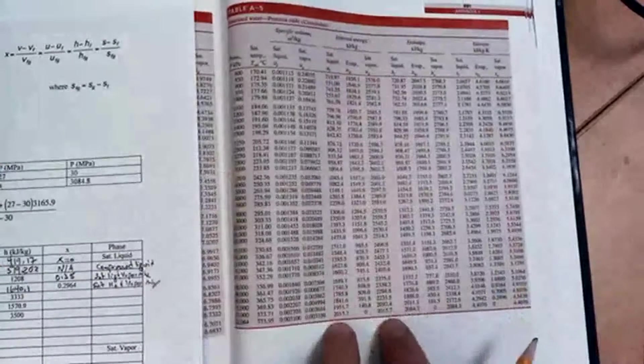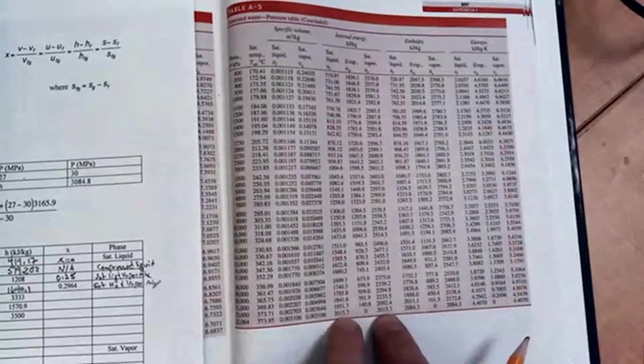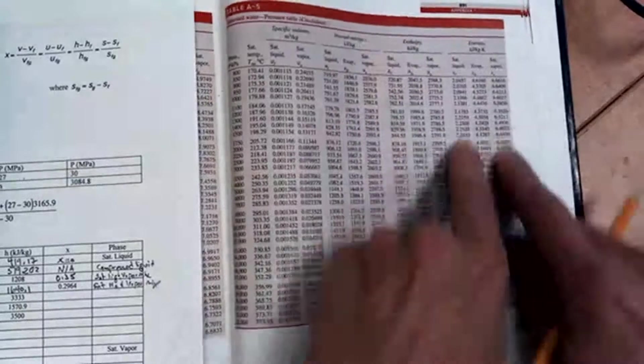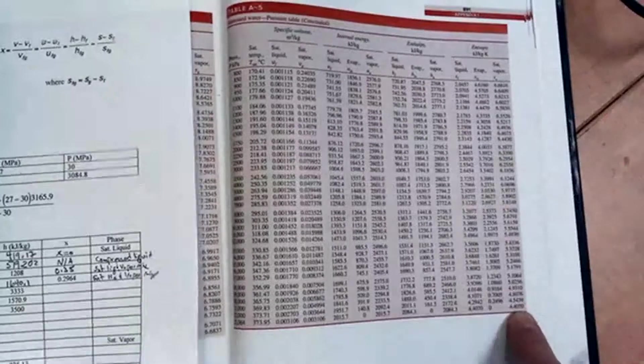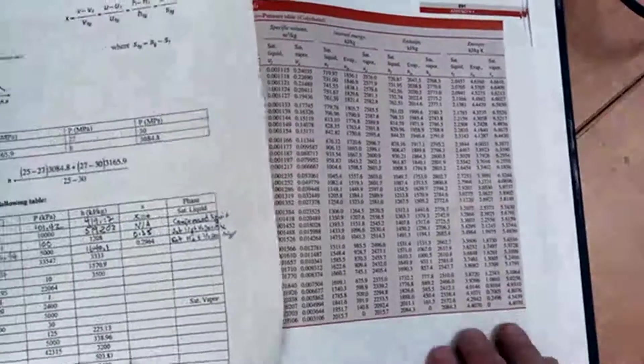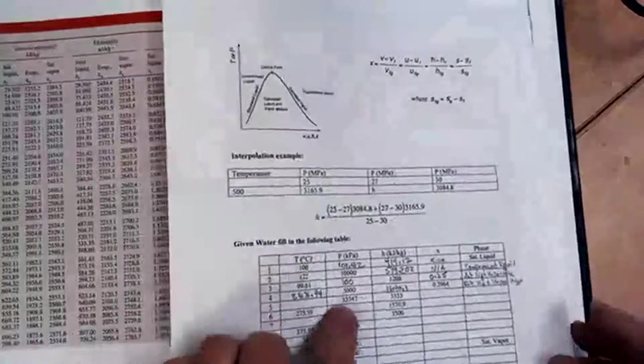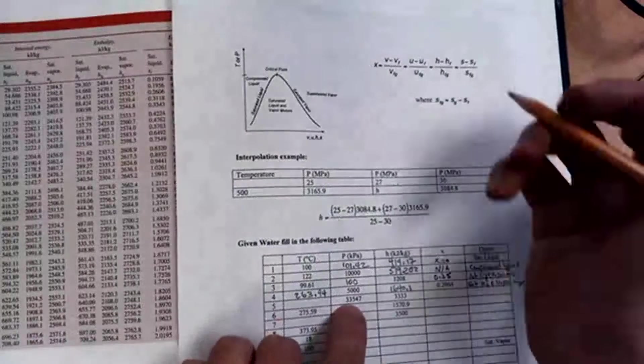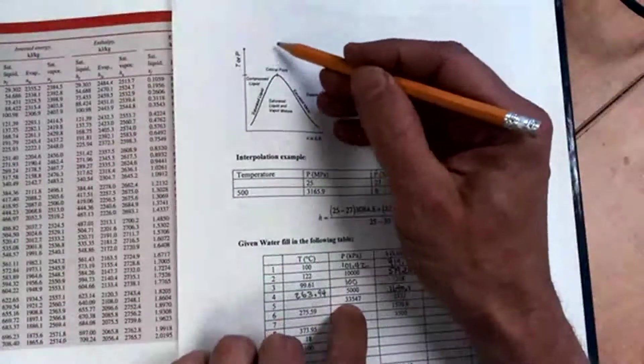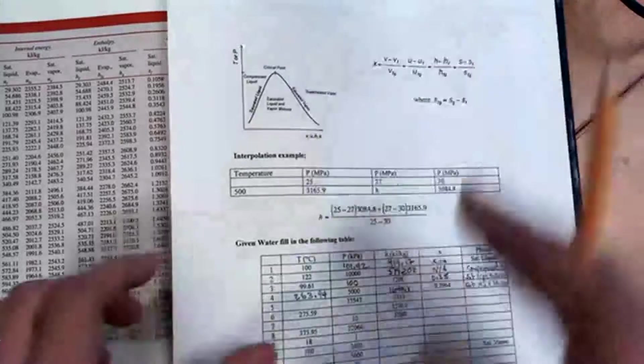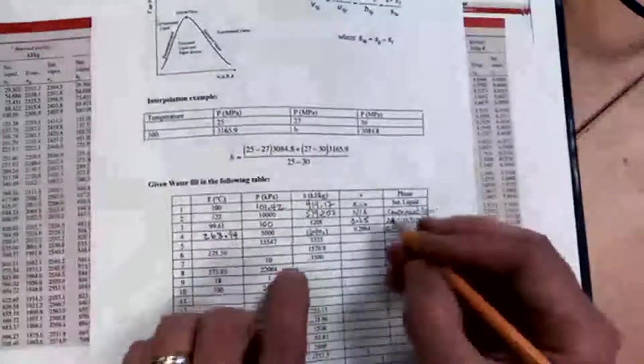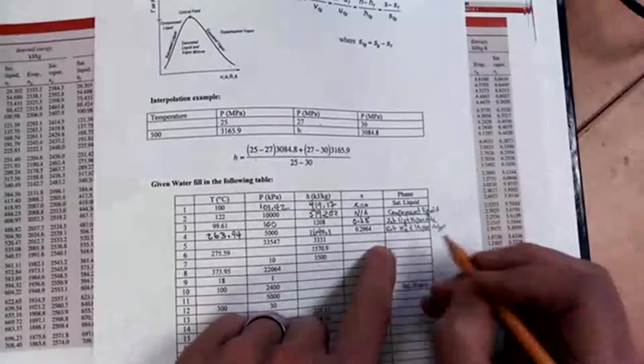So you can see the internal energy has the same values at this last line, the critical point. So does the enthalpy. So does the entropy. So that is pretty cool. So essentially, I know that at this high pressure, 33,547, I must be above the dome somewhere. Everything above the dome is superheated. So right away I can say this is a superheated vapor.